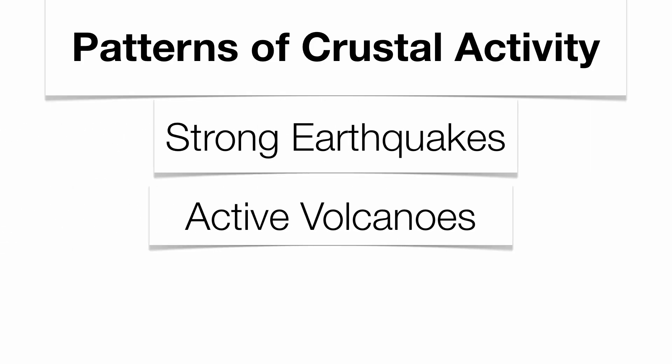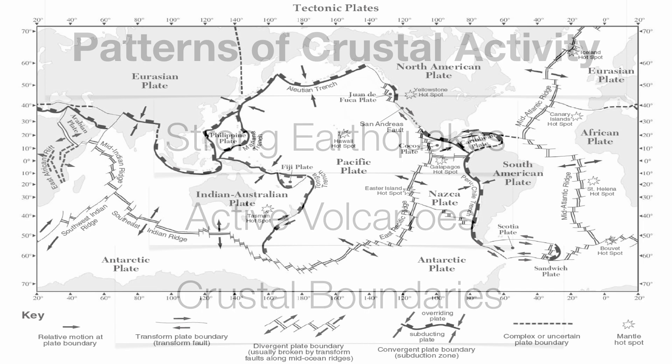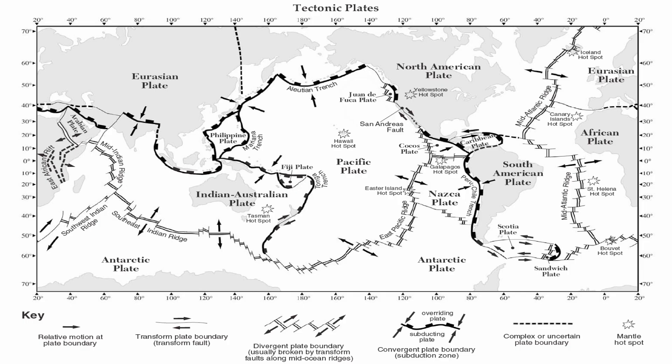Over the course of this chapter we've found that earthquakes and volcanoes tend to be found in the same regions — usually along crustal boundaries. When you take a look at your tectonic plates chart, most of what you're looking at is your subduction zones and your divergent boundaries — that's where the majority of your earthquakes and volcanoes are going to be found. Thank you very much and we'll talk to you soon. Bye-bye.